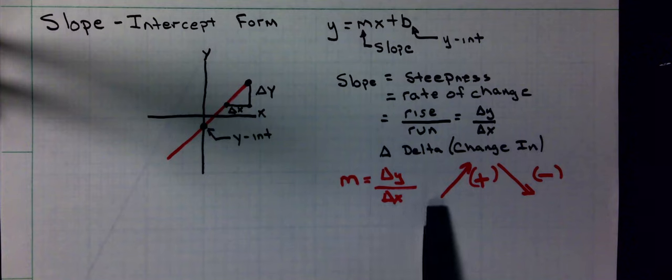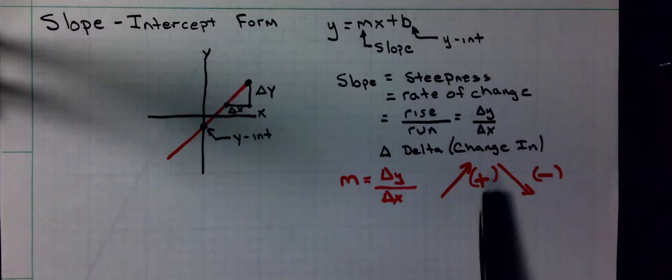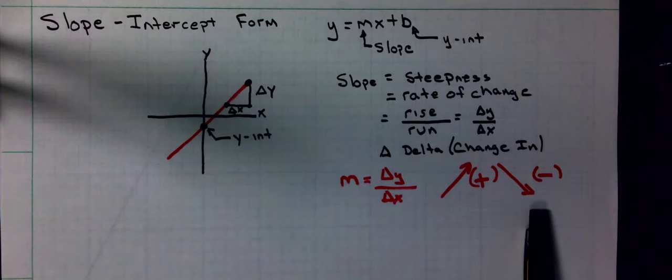If the line is going uphill from left to right, slope will be positive. If our line is going downhill from left to right, slope will be negative.